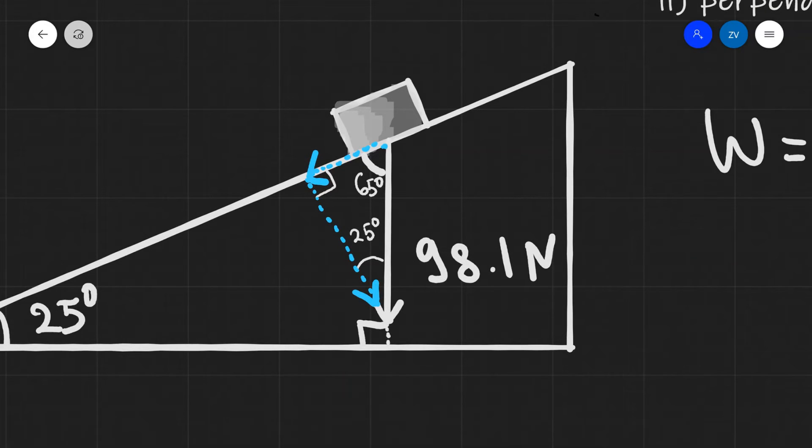And now we can apply the usual tricks of resolving vectors. Remember the opposite component will be equal to the hypotenuse times the sine of the opposite angle. So the opposite component which is the parallel component is going to be the hypotenuse which is 98.1 times the sine of the angle which is sine of 25 degrees. And this one here is the parallel component. The perpendicular component which is this component over here, as you can see this is the adjacent component, is going to be 98.1 cos of 25 degrees. And this one here is the perpendicular component.